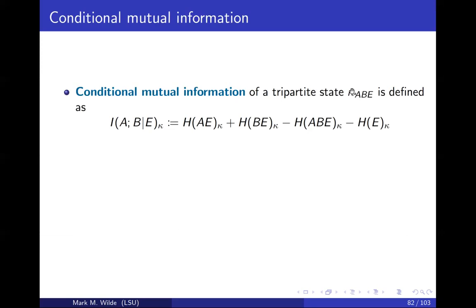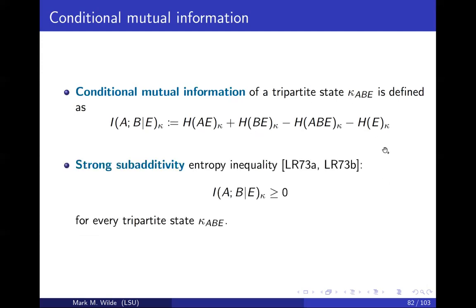Let's consider what's called conditional mutual information. We take a tripartite state on systems A, B, and E, and compute a linear combination of entropies, where the entropy formula for a state rho is minus trace(rho log base 2 rho). Here you use the reduced state on systems A and E tracing over B, the reduced state on systems B and E tracing over A, et cetera. One thing we know about conditional mutual information is that it's always non-negative — that's a highly non-trivial theorem called strong sub-additivity. If you want to look at proofs, you can look at the book I have with Sumit: Principles of Quantum Communication Theory and a Modern Approach.